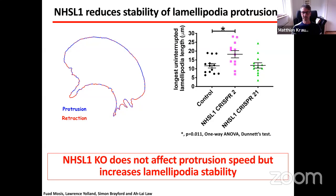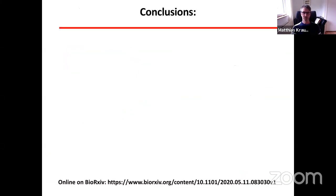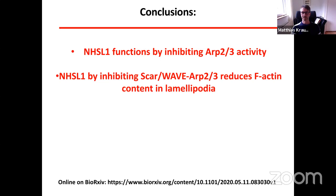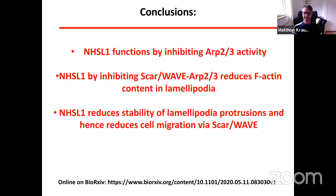We conclude that NHS-like 1 knockout does not affect protrusion speed but increases lamellipodia stability. In summary, NHS-like 1 functions by inhibiting Arp2/3 activity, thereby reducing actin content in lamellipodia, and thus reduces the stability of lamellipodia protrusions and hence reduces cell migration — all via the SCAR/WAVE complex.